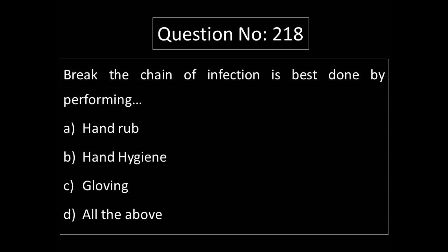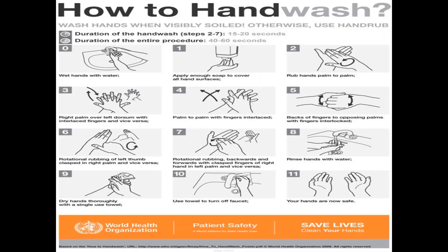Question No. 218. Breaking the chain of infection is best done by performing: Option A: Hand rub. Option B: Hand hygiene. Option C: Gloving. Option D: All the above. Breaking the chain of infection is best done using all of these options. The World Health Organization recommends 11 steps for hand washing.